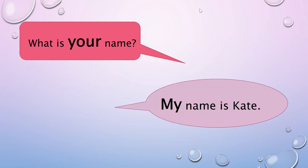Pay attention to these phrases: 'What is your name?' — як тебе звати, яке твоє ім'я. Your name — твоє ім'я. My name is Kate. Today part of our lesson will focus on the words 'your' and 'my'. These words are called possessive pronouns — присвійні займенники — they show that something belongs to someone.